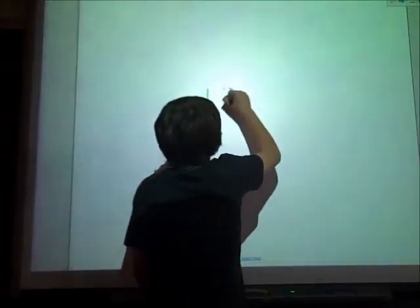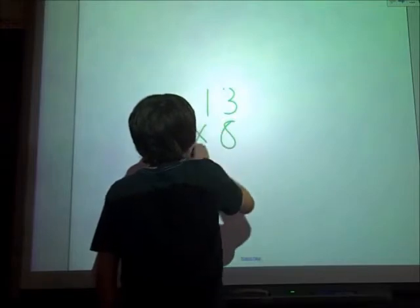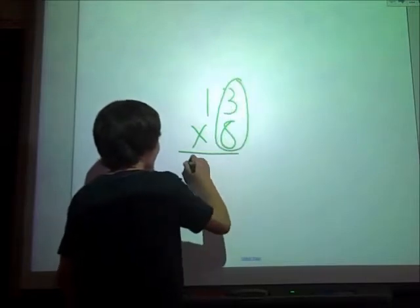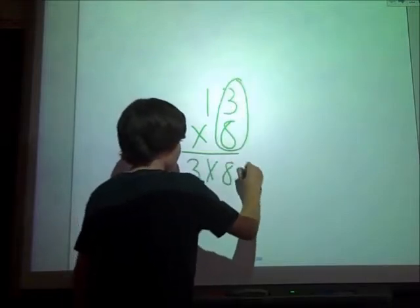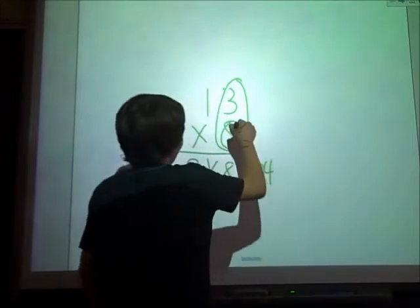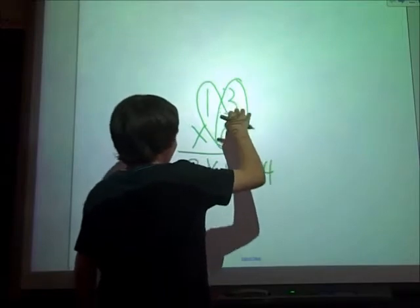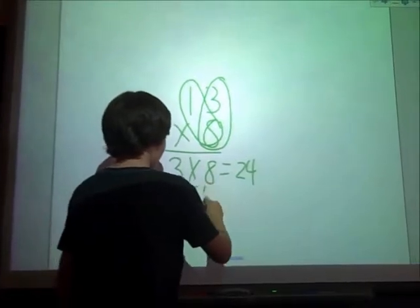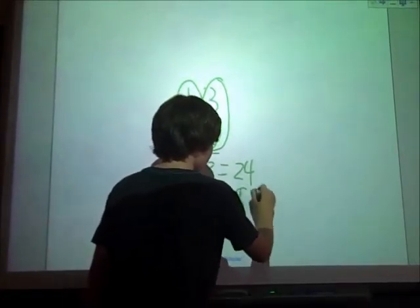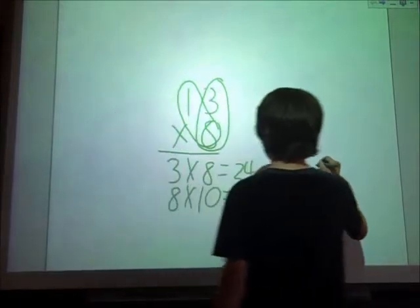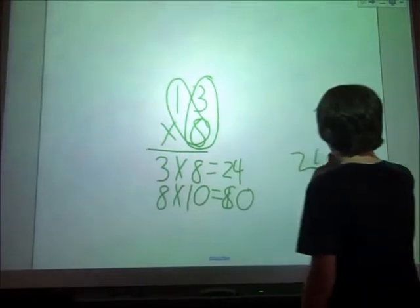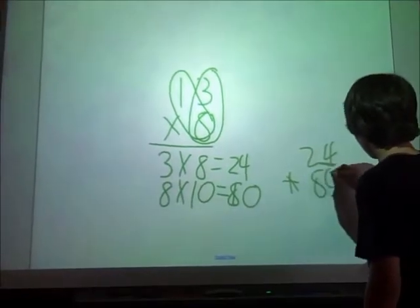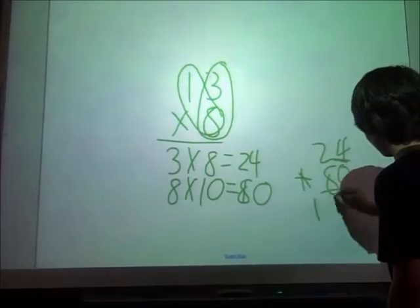Thirteen and 8. Three times eight equals 24. Eight times 10, because it's in the tens place, equals 80. So when you add these two up together, it goes 104.